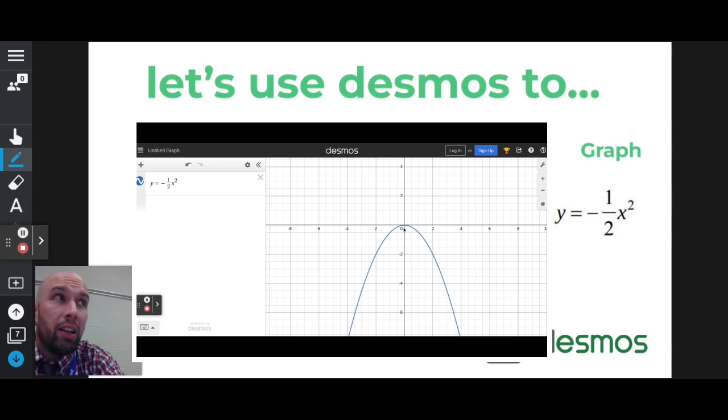And if I need to get some points, I can kind of hover over it, click on it, and go where I need to go and get some points that might look important if I'm putting this on a coordinate plane myself.